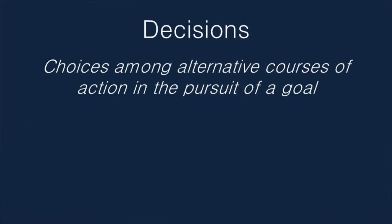All of our decisions have some impact on our lives. Even trivial decisions like what to eat, how to dress for work, or whether to exercise or watch TV will have cumulative consequences over our lives. When we talk about decisions, we're talking about choices among alternative courses of action in pursuit of a goal — a situation where we want something, there are different ways to go about getting it, and we have to decide which way we'll choose.